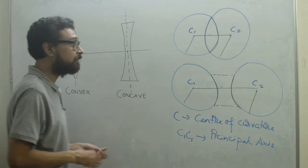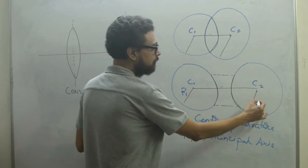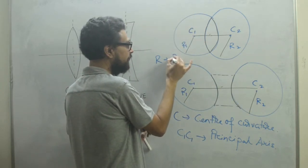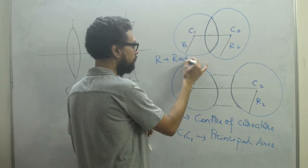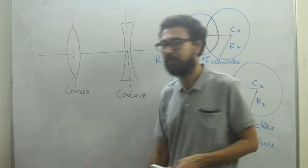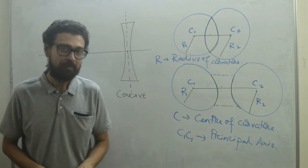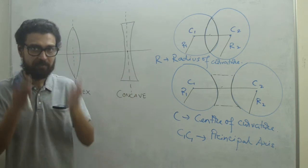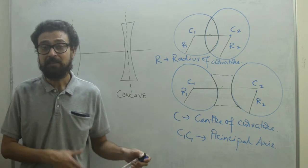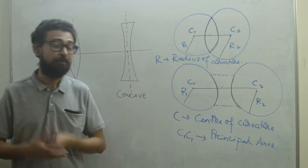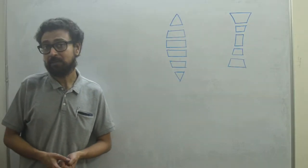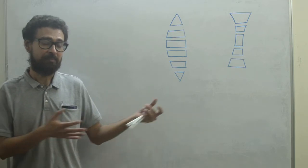We also have the radius — you can see R1 and R2 for both lenses. These are called the radius of curvature. Similar to center of curvature, when we have centers for a spherical boundary we also have radius, and that is called the radius of curvature. Two radii of curvature are formed by the two spherical boundaries. Now let's move to the other parts which will explain how a lens diverges or converges a particular ray of light.